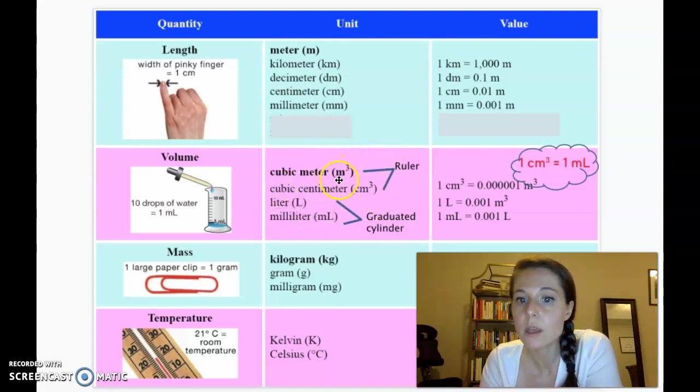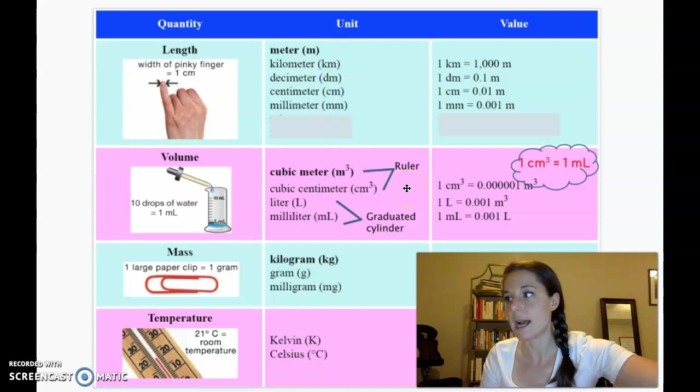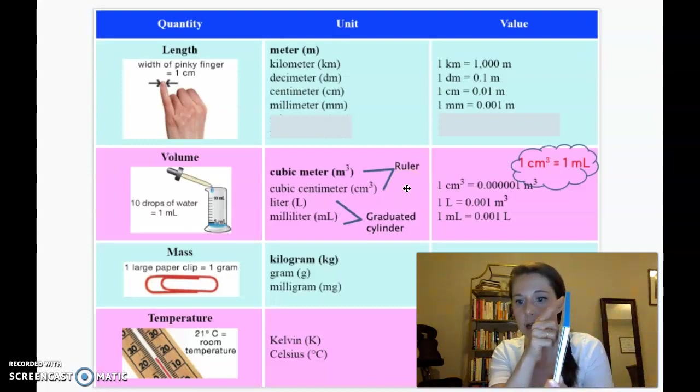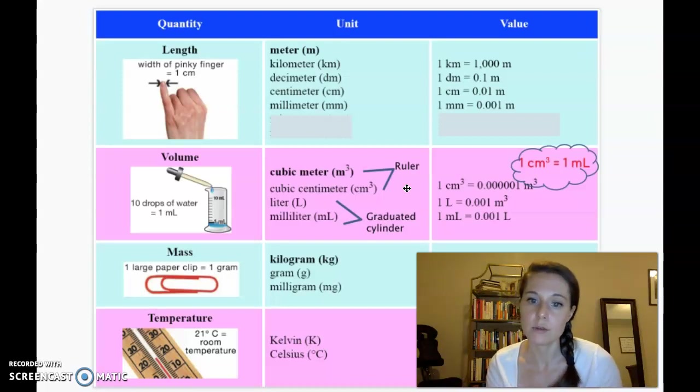You can have these cubic units, so cubic meters or cubic centimeters, or you can have liter units. So cubic units come from using a ruler, taking an object that has a regular size, like something like this, right? It has a length and a width and a height, and using a ruler and multiplying length times width times height to get the volume. So that's where that cubic number comes from.